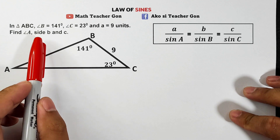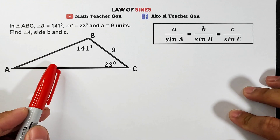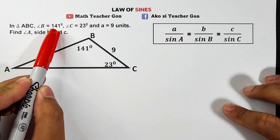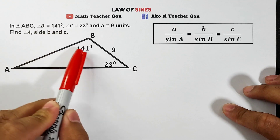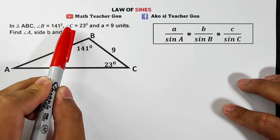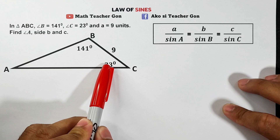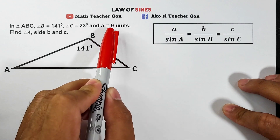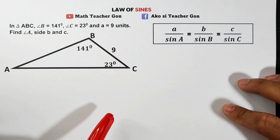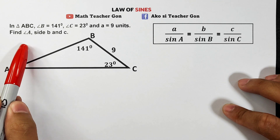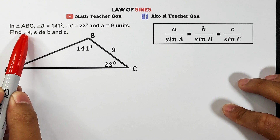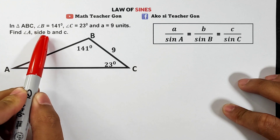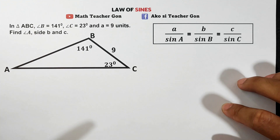Let's start with the first example. In triangle ABC, we are given angle B which is 141 degrees, angle C which is 23 degrees, and side a which is 9 units. The problem asks us to find angle A, side b, and side c.